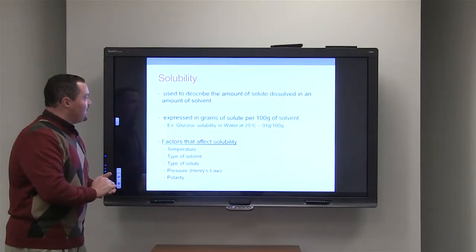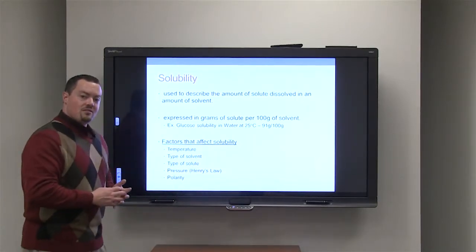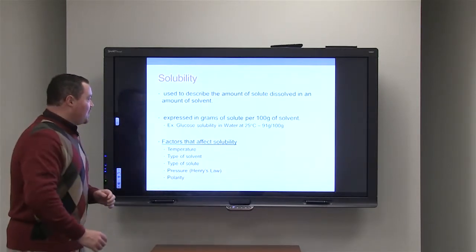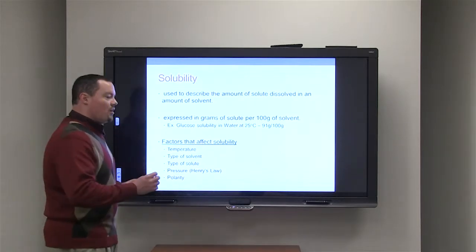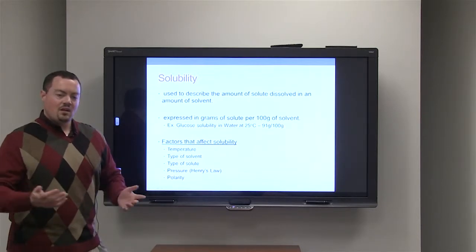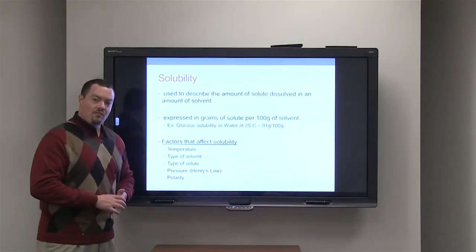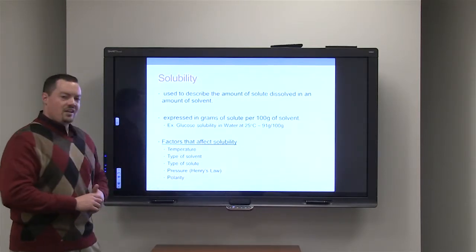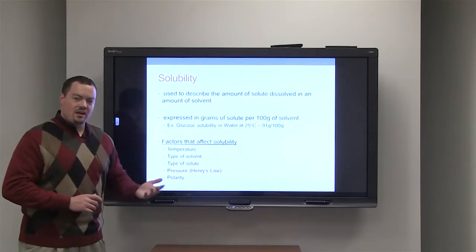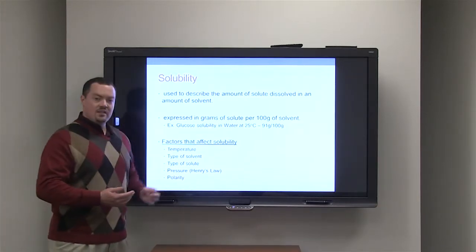Solubility is the term we use to describe the amount of solute that dissolves in a specific amount of solvent. And in chemistry, we use solubility to tell how much of the solute dissolves in 100 grams of the solvent. An example of this is glucose. So glucose at room temperature, or 25 degrees Celsius, has a solubility of 91 grams per 100 grams. So what that tells us is that 91 grams of glucose will dissolve in 100 grams of the solvent. In this case, it's water.